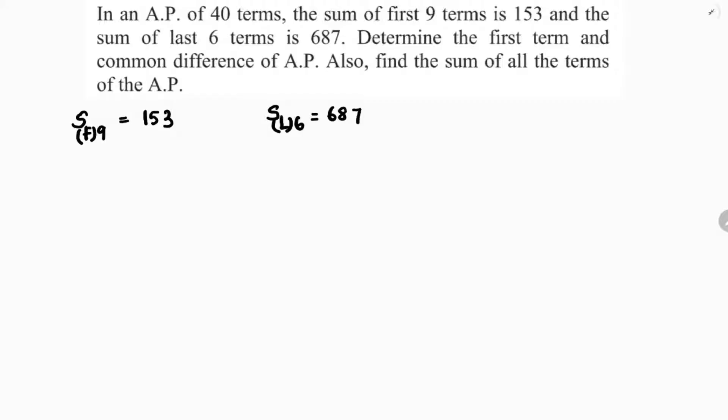The sum of n terms formula is Sn equals n by 2, 2A plus n minus 1 into D. If we substitute here sum of first 9 terms: 9 by 2, it's the first term so the series starts from the beginning, 2A plus 9 minus 1 into D is 153.